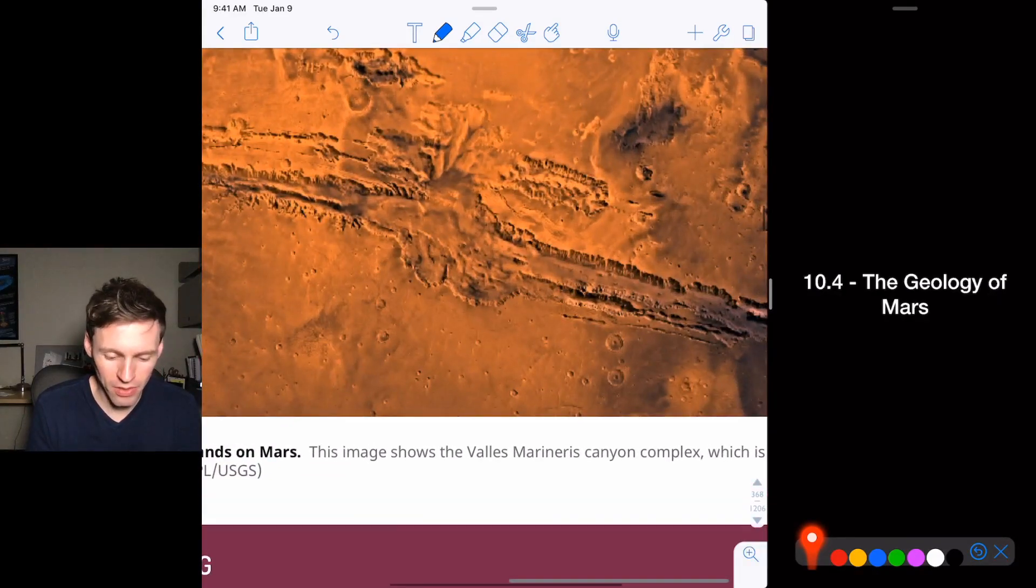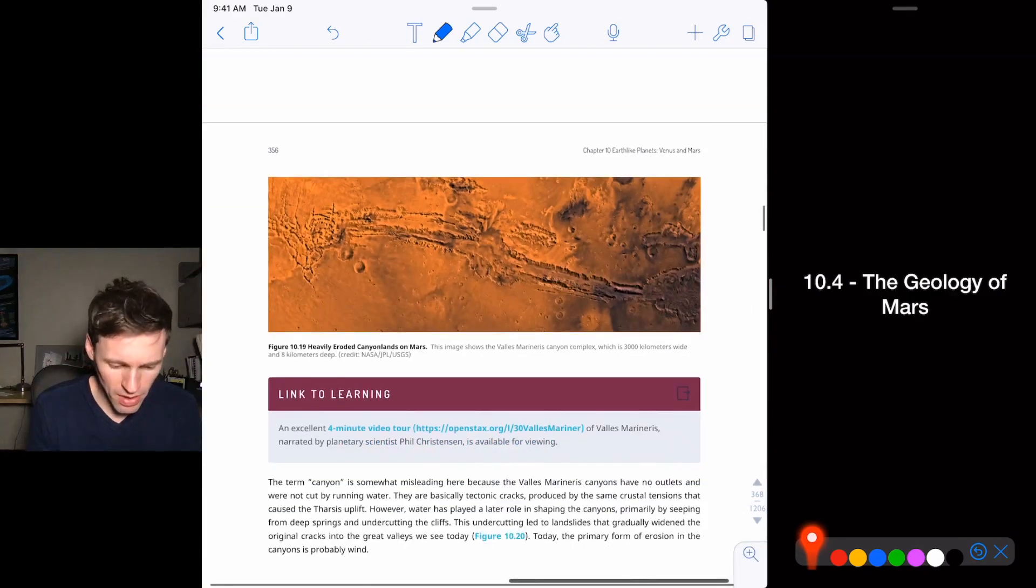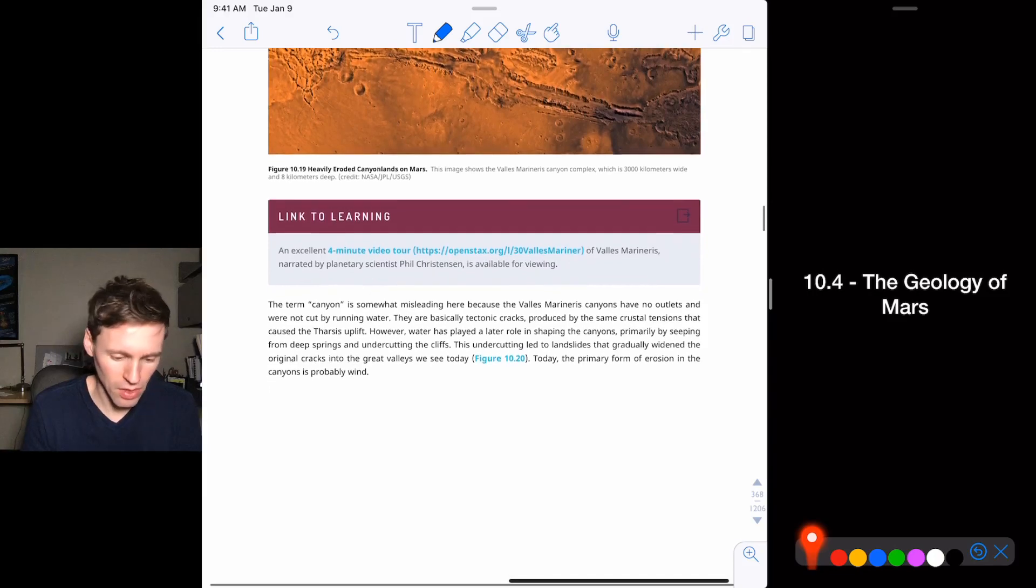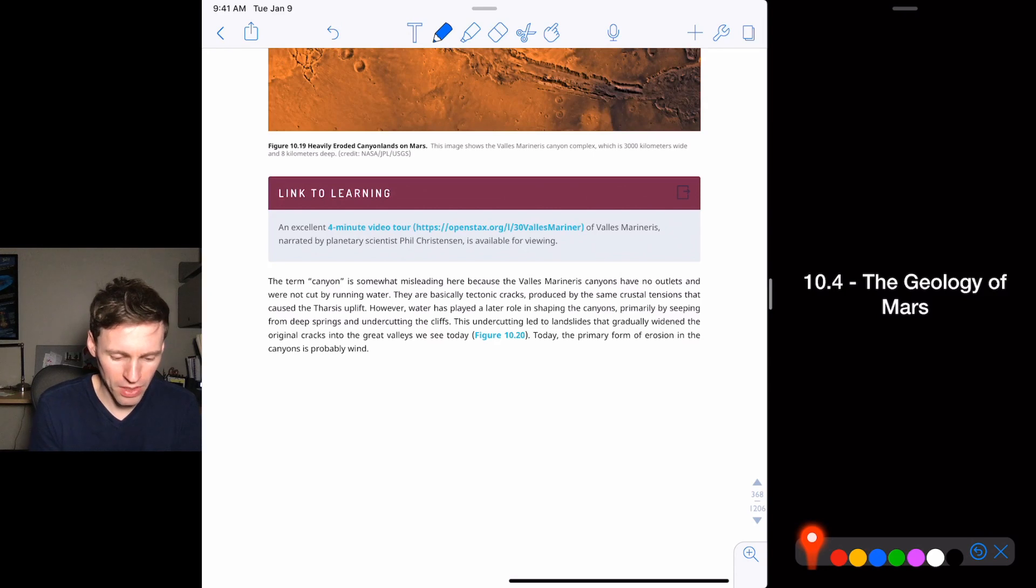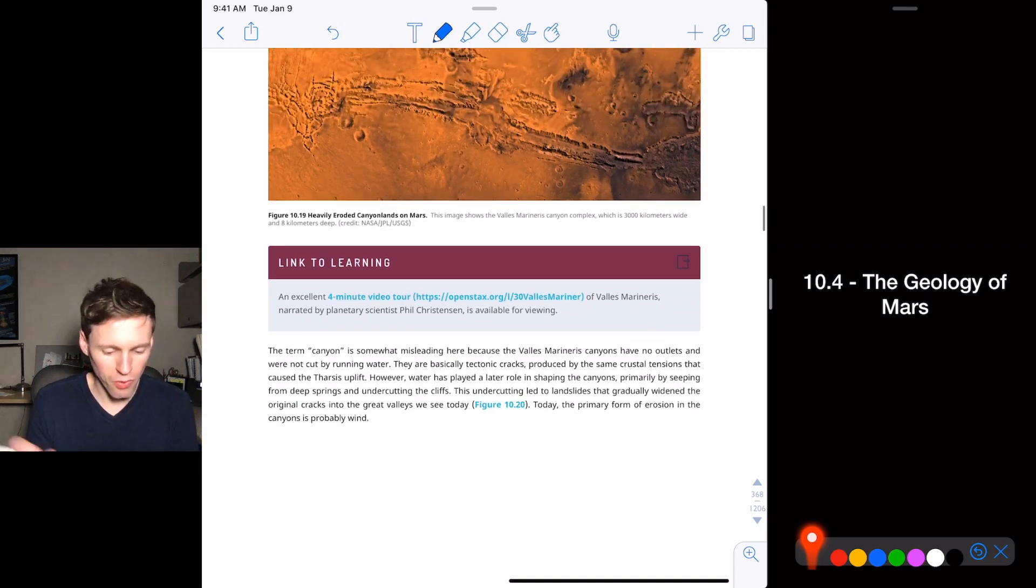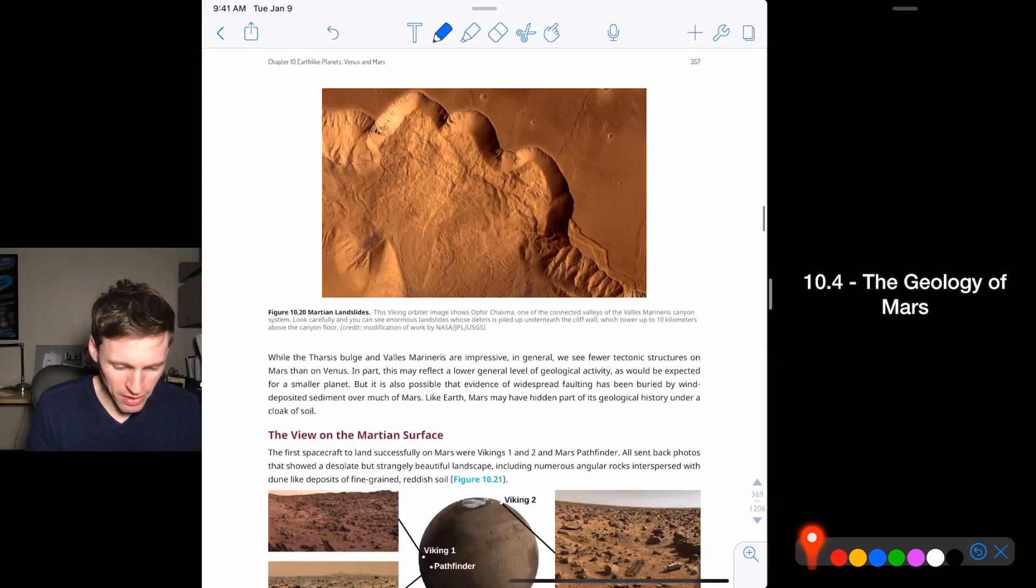And then there's Valles Marineris, the largest canyon system in the solar system. Amazing thing, 3000 kilometers wide, eight kilometers deep. It's a huge thing. It's not a canyon because it was not cut by running water. So that's a little bit of a misnomer. So we think from tectonic motions that the Mars just kind of cracked, cracked open. Okay. So read about that. It's amazing. There's landslides on there. You can see from the surface, the different probes that have landed on it.